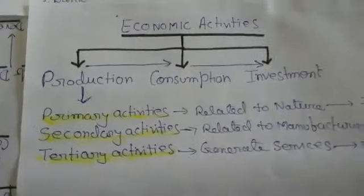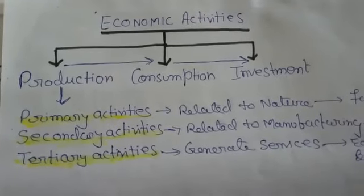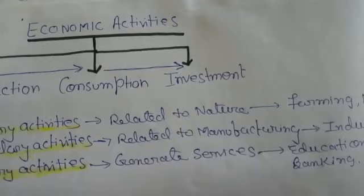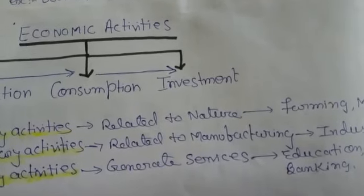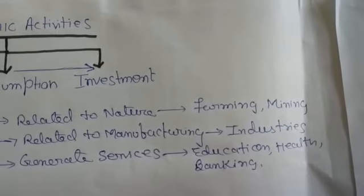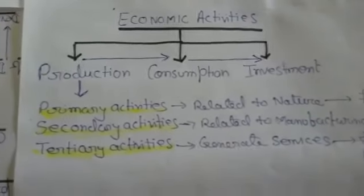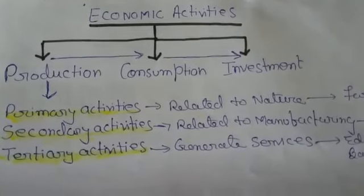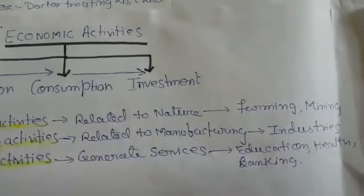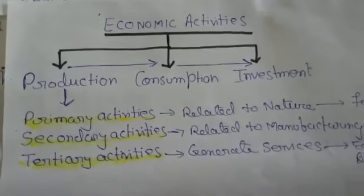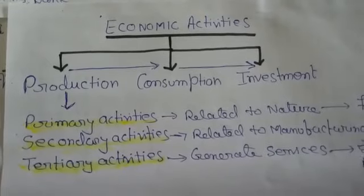Primary activities are related to nature, e.g. farming, mining, lumbering, etc. Secondary activities are related to manufacturing, i.e. processing of raw material into finished products using machines, e.g. industries, factories, etc. Tertiary activities are those activities which generate services, e.g. education, health care, and banking.